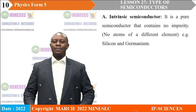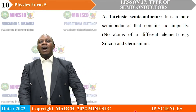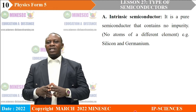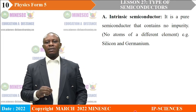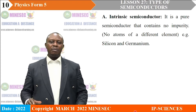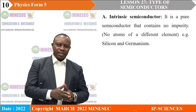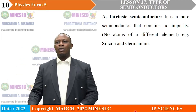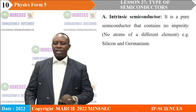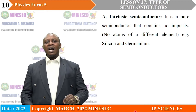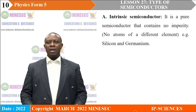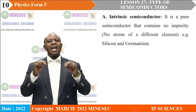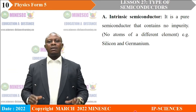Semiconductors can be classified as intrinsic semiconductors and extrinsic semiconductors, depending on the purity of the material — specifically, depending on the presence or absence of atoms of another element in the semiconductor material. Let us look at intrinsic semiconductors. Intrinsic semiconductors are called pure semiconductors. These are semiconductors that do not contain foreign atoms — that is, atoms of a different material.